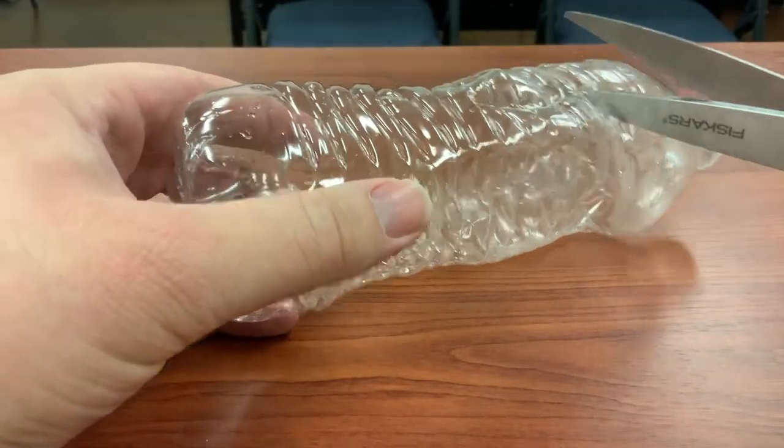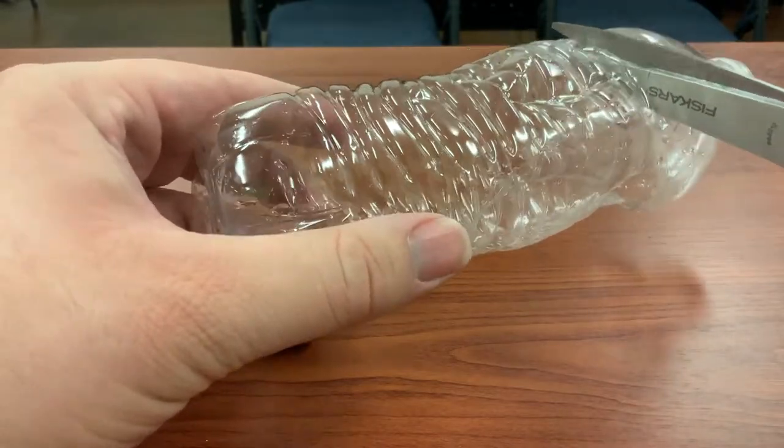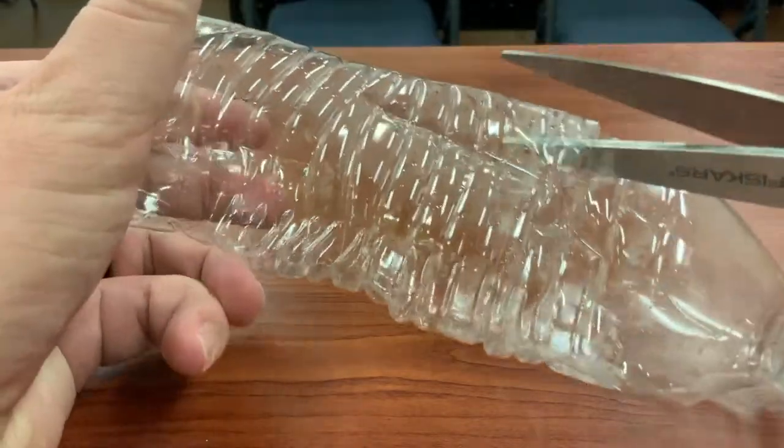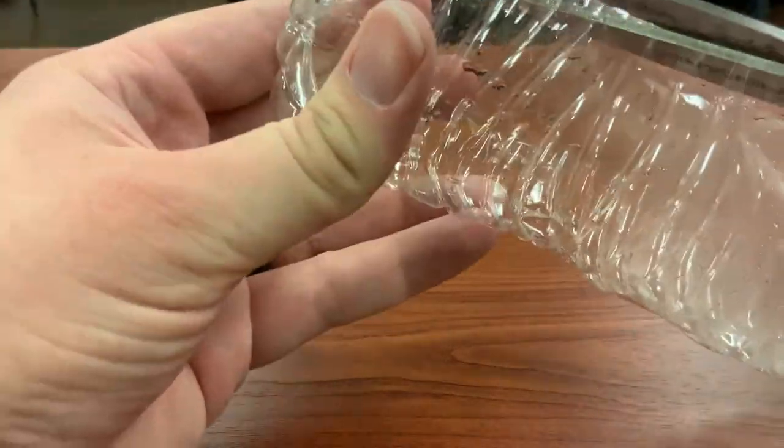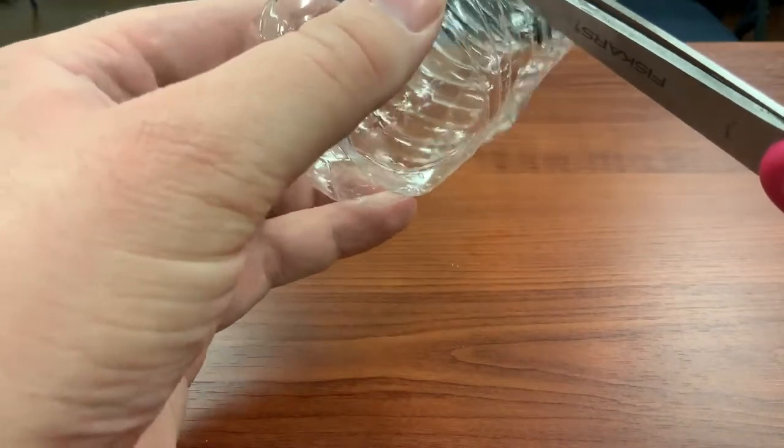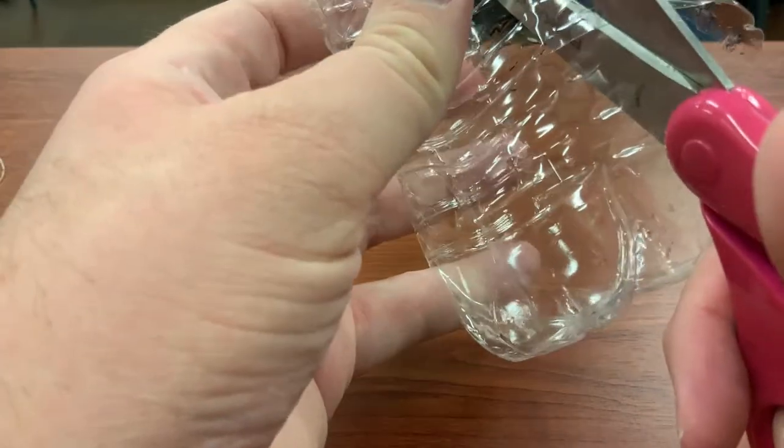Now that I have a hole punched through, all I'm going to do is cut a segment of the bottle out. You don't want to cut all the way around. You're just going to cut about not quite halfway. We're just making an opening in the bottle that the birds can get to the seed.